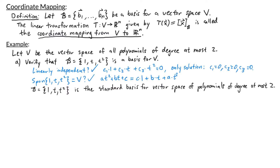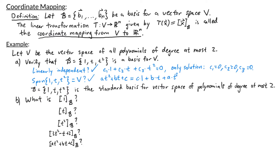Now let's see how we would think about these polynomials as the column vectors we're used to. In part b, we're asked to find the b-coordinate vector for several polynomials. First, we want the b-coordinate vector for the polynomial 1. To find b-coordinates, I write it as a linear combination of my basis vectors: 1 = 1·(1) + 0·t + 0·t². The b-coordinates are the weights, so the b-coordinate vector for 1 is [1, 0, 0].